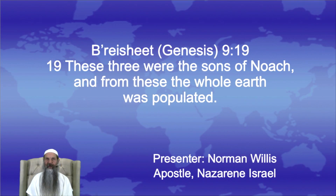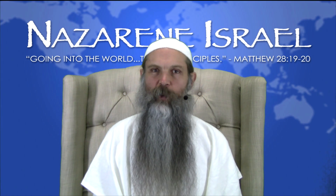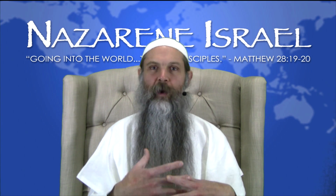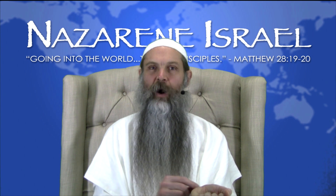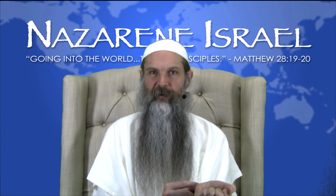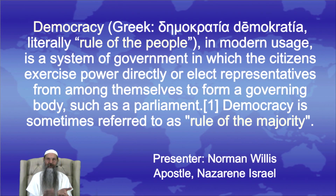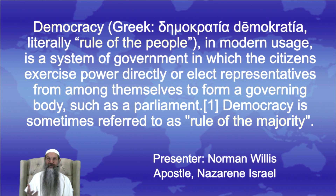In Genesis 9:19, we see that Shem, Ham, and Japheth were the sons of Noah, and from these the whole earth was populated. What we're effectively saying is that Esau is an appeal to mankind — an appeal to our common bloodness, red being the color of blood. Democracy, as defined by Wikipedia, is the rule of the people, whether they exercise that power directly or elect representatives to form a governing body such as a parliament or Congress. Democracy is sometimes referred to as the rule of the majority.